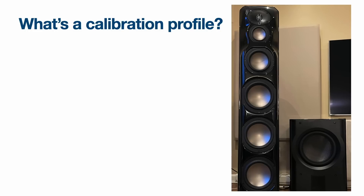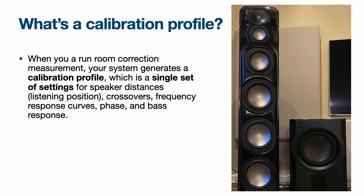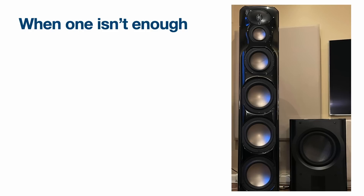What's a calibration profile? When you run a room correction measurement, your system generates what's called a calibration profile — a single set of settings for speaker distances, basically your primary listening position, crossovers, frequency response curves, sometimes phase, and bass response. And there are times when having just one calibration profile isn't enough.